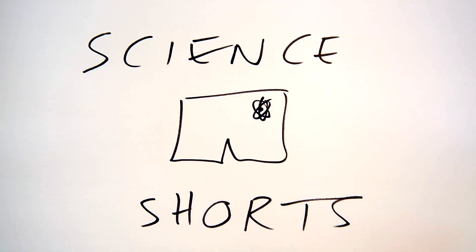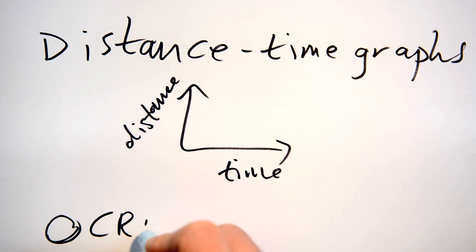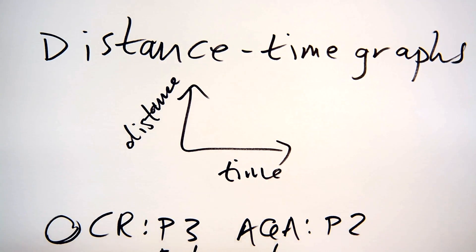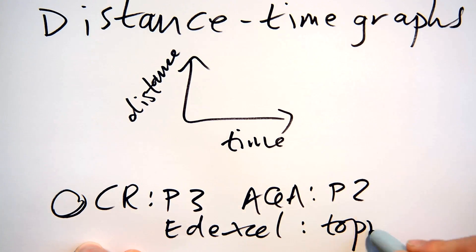Science Shorts gives you speed and distance time graphs. This will be in P3 for those of you doing OCR GCSE Science, P2 for AQA and Topic 15 for Edexcel.